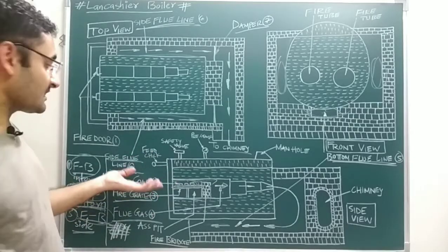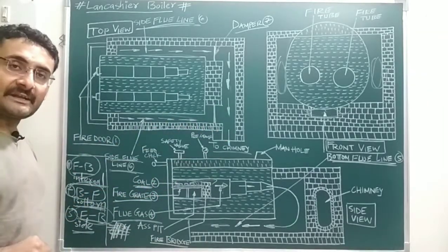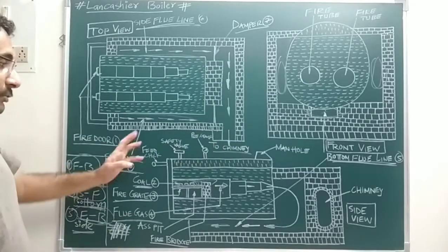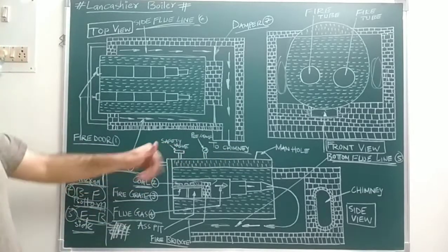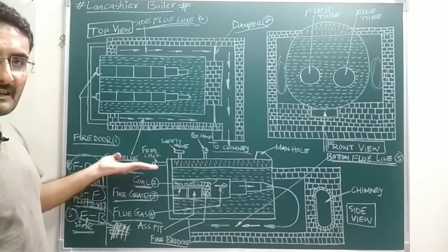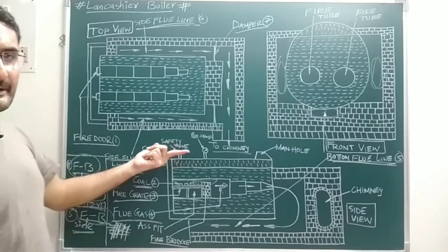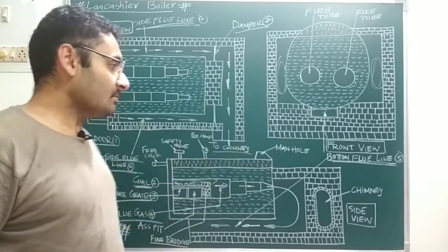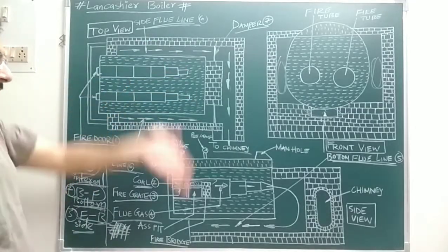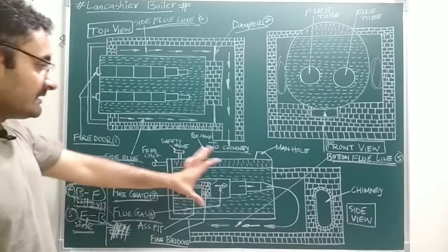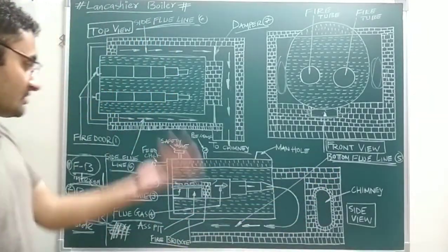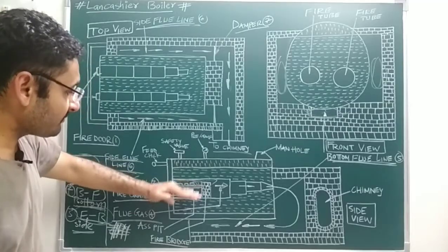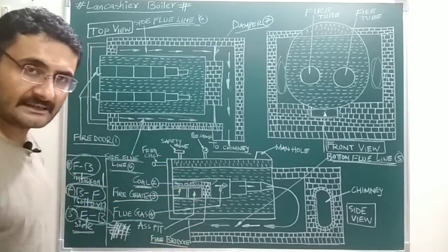Now for mountings and accessories — these are similar to those discussed for the Babcock and Wilcox boiler. Key components include: a feed check valve to insert water; a safety valve for safety to prevent accidents due to high pressure; a pressure gauge to indicate steam pressure; a manhole through which a person can enter the shell and clean the boiler; a chimney through which vapour and burnt particles are rejected; and an ash pit to collect coal particles remaining after combustion.